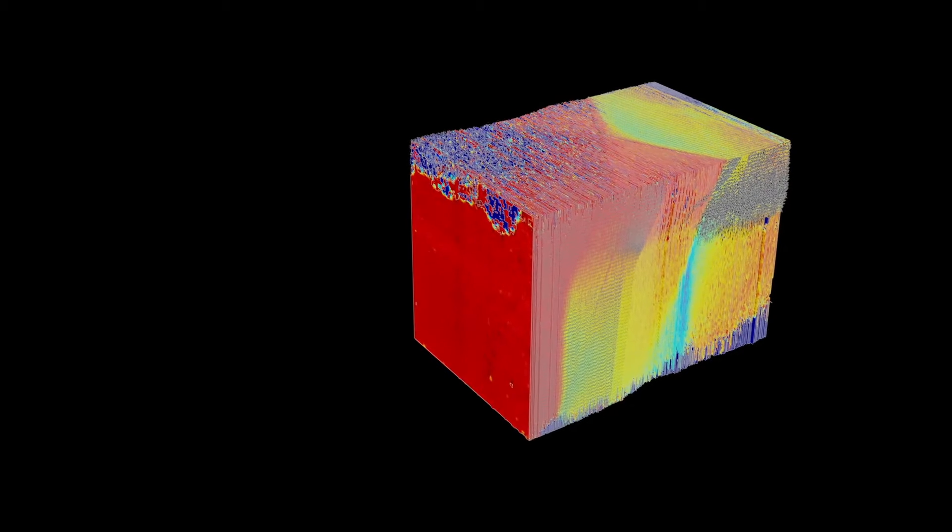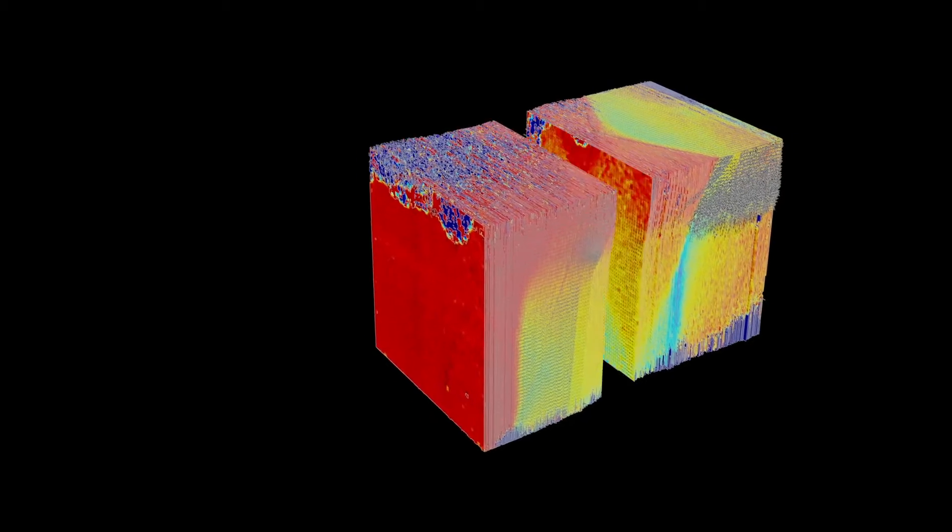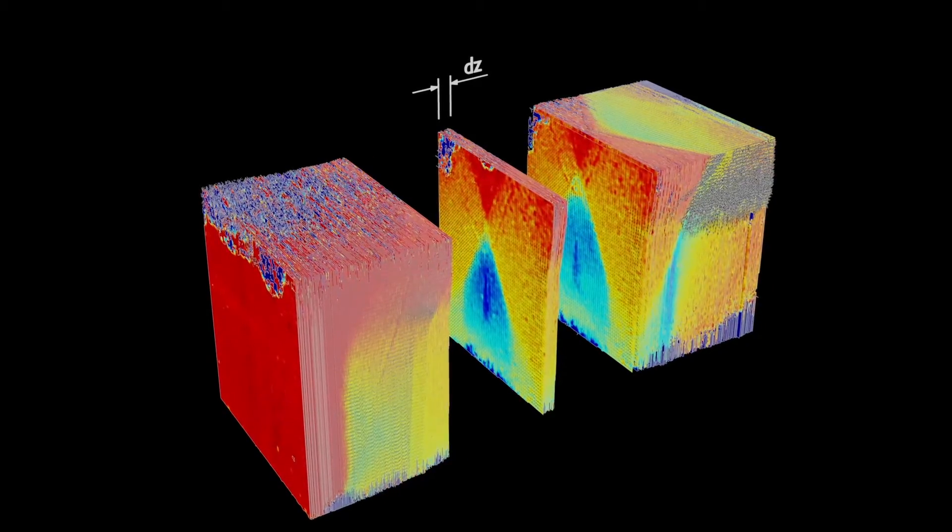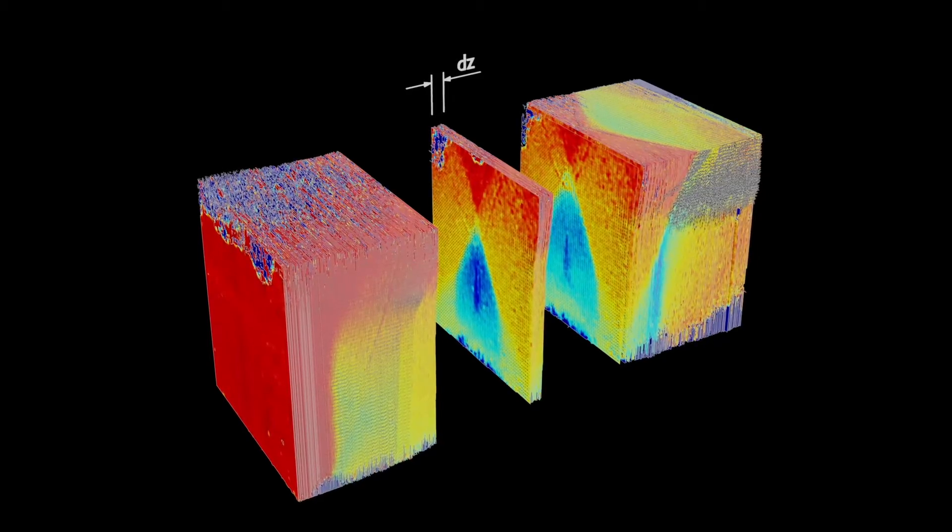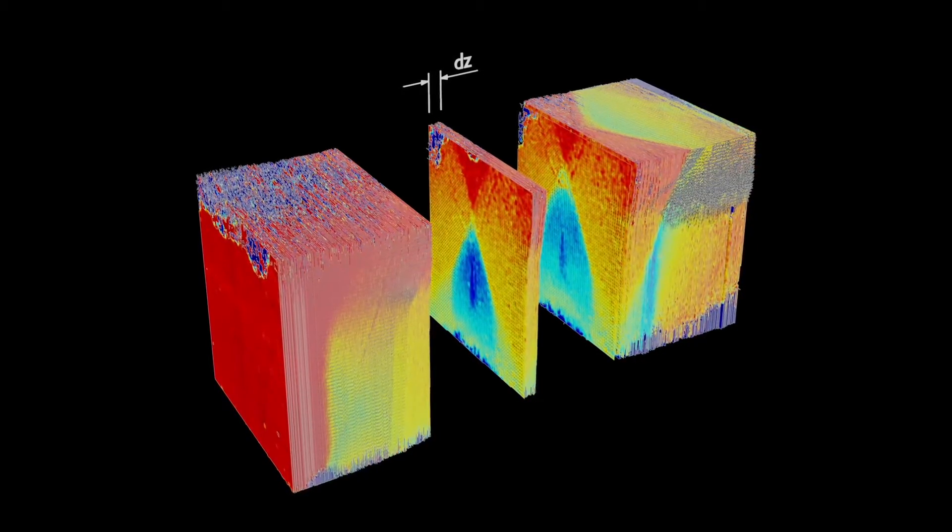We are going to choose a distance to average these instantaneous snapshots over. I call this process spatial temporal averaging as we average over different spatial locations and time instance.